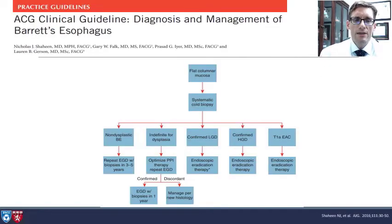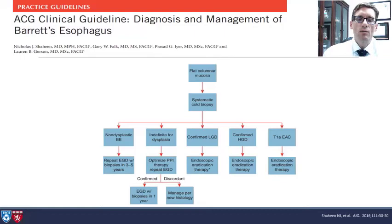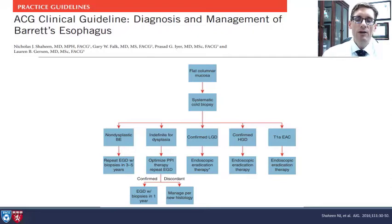This is an ACG clinical guideline regarding the diagnosis and management of Barrett's esophagus. If you have flat columnar mucosa and perform systematic cold biopsies, you can have non-dysplastic Barrett's — repeat EGD with biopsy in three to five years. If indefinite pathology for dysplasia, optimize PPI therapy and repeat EGD. If confirmed low-grade dysplasia, proceed with endoscopic eradication therapy. If confirmed high-grade dysplasia, again proceed with endoscopic eradication therapy. If T1A esophageal adenocarcinoma, proceed to endoscopic eradication therapy as well.